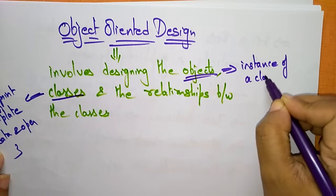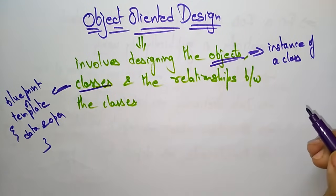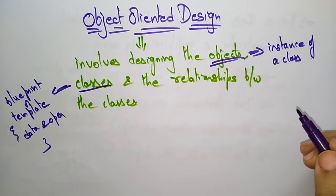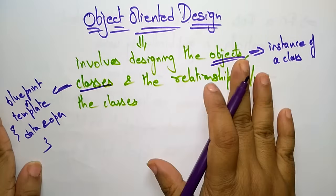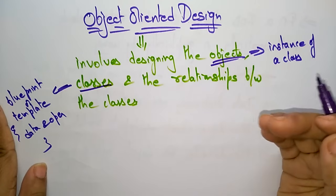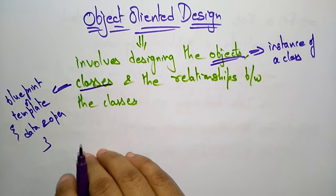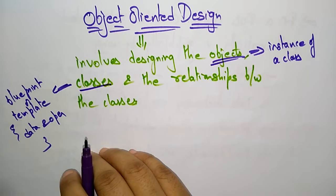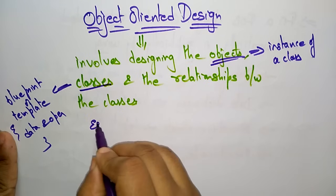Whatever concept you have taken for a program, that program has to be written in the form of classes and objects. So first you need to identify what objects are present in the program and what classes you are introducing. A class is simply a blueprint or a template which consists of some data and operations.